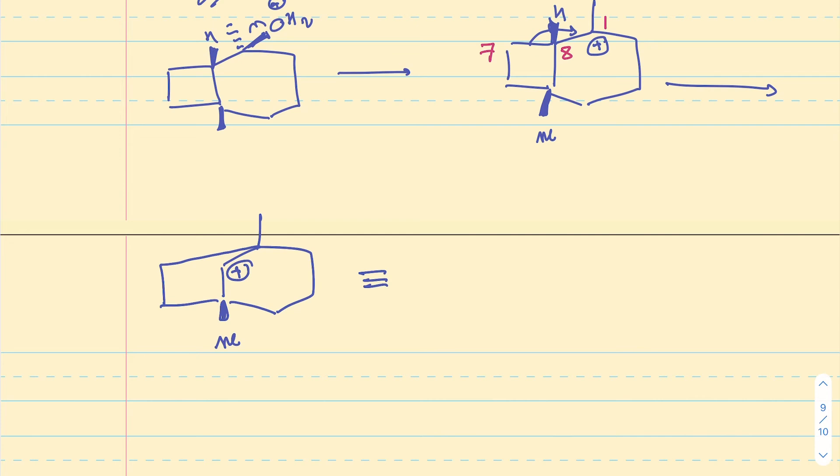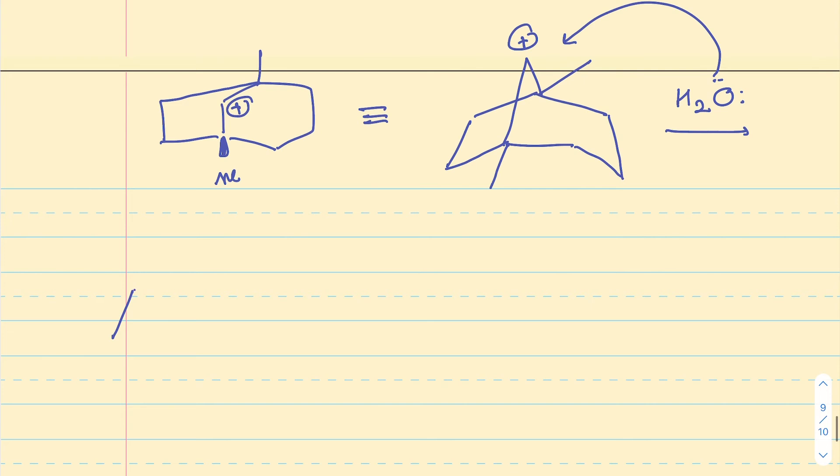I hope you got that. So, this is the carbon cation that I have. Now, if I try to draw that in a way that is more similar to that of the product, I'm going to, let's see if I'm going to have this. All right. So, I have this, and then I have the two methyls, and carbon eight with a positive charge, which can be intercepted by a water molecule to basically give me something very close to the product.